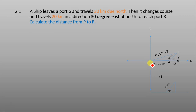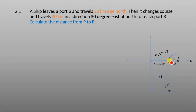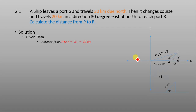The free body diagram shows the distance traveled north from P to A is 30 kilometers. Then it changes direction, making an angle of 30 degrees with the vertical, and travels 20 kilometers toward port R. We need to calculate the distance between P and R.